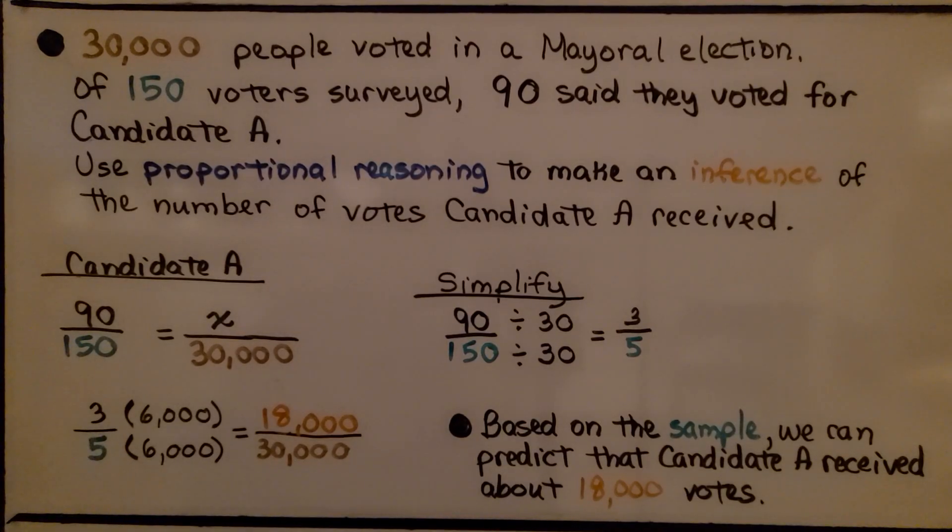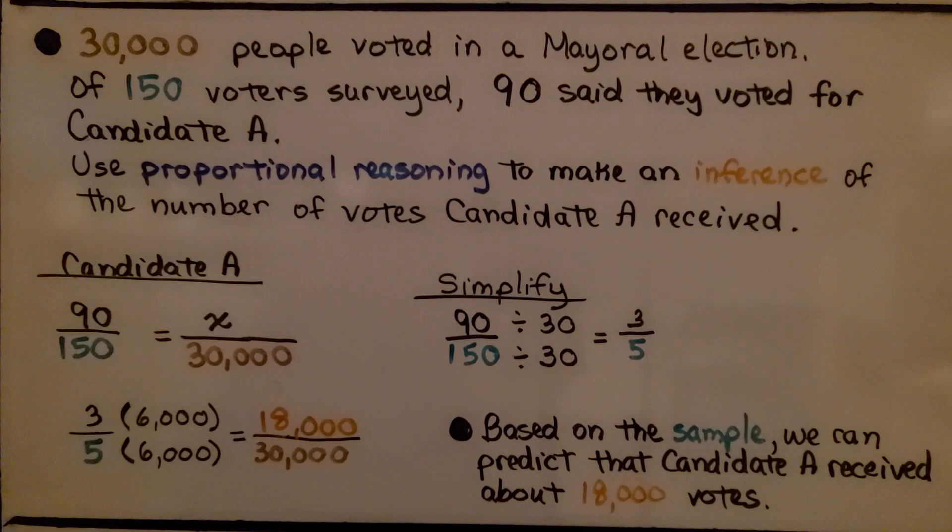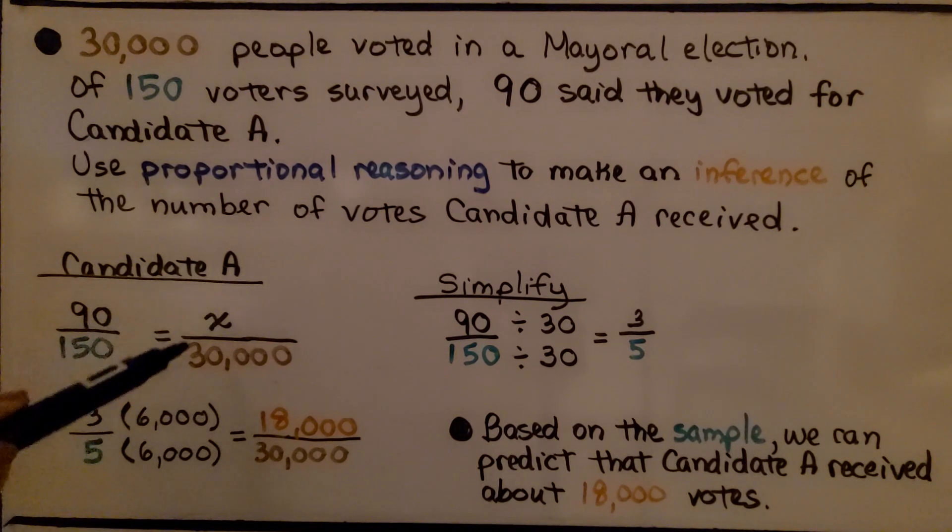Thirty thousand people voted in a mayoral election. Of 150 voters surveyed, 90 said they voted for Candidate A. Use proportional reasoning to make an inference of the number of votes Candidate A received. So, Candidate A got 90 of 150 voters that were surveyed. That's our random sample, 150. Ninety of them said they voted for Candidate A. Our population is 30,000, so it's equal to x over 30,000.